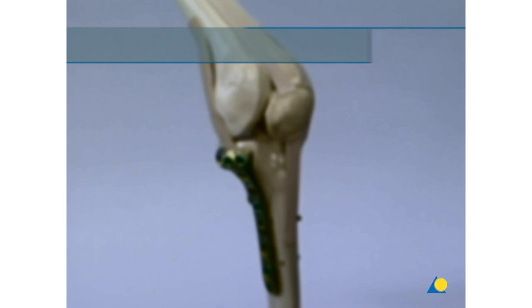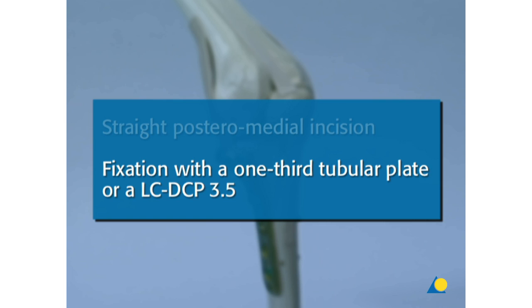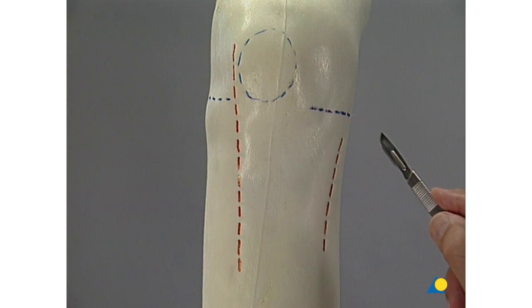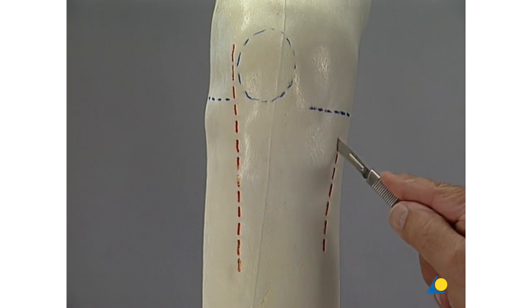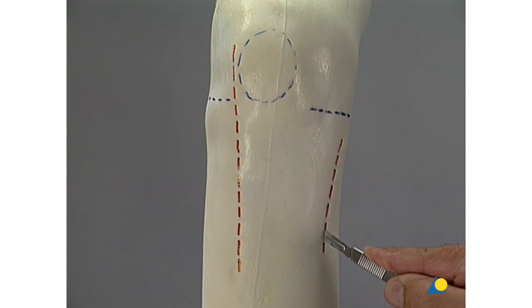Reduction and Fixation of the Medial Plateau. First, a straight posteromedial incision and second, fixation with a one-third tubular plate or an LC-DCP 3.5. The medial incision is directly dorsal to the pes anserinus, which is elevated or partially incised, depending on the fracture configuration.